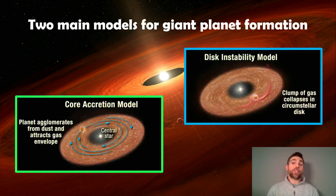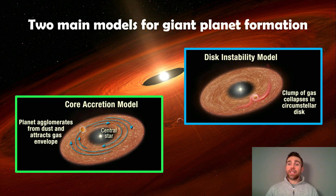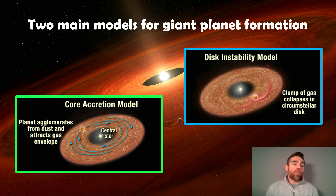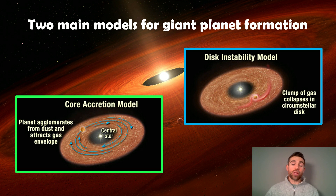There are two main models for giant planet formation. You've got the core accretion model, which I did a different video on, and the disk instability model or disk fragmentation. In the core accretion model, planets form by slowly accumulating dust and gas in the disk — it takes a lot longer. Whereas in the instability model you have a localized collapse of the disk, which is a very rapid process and you can form a planet quite quickly.